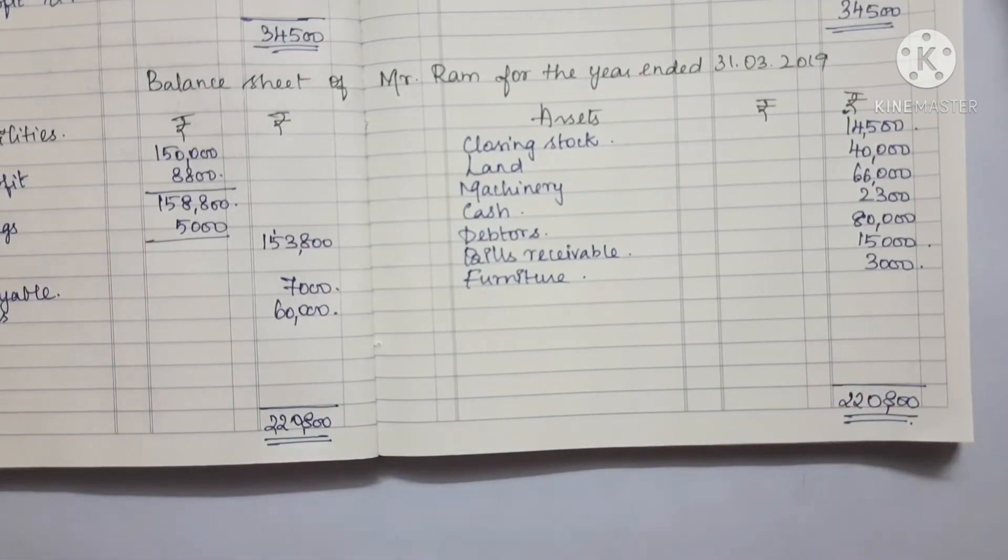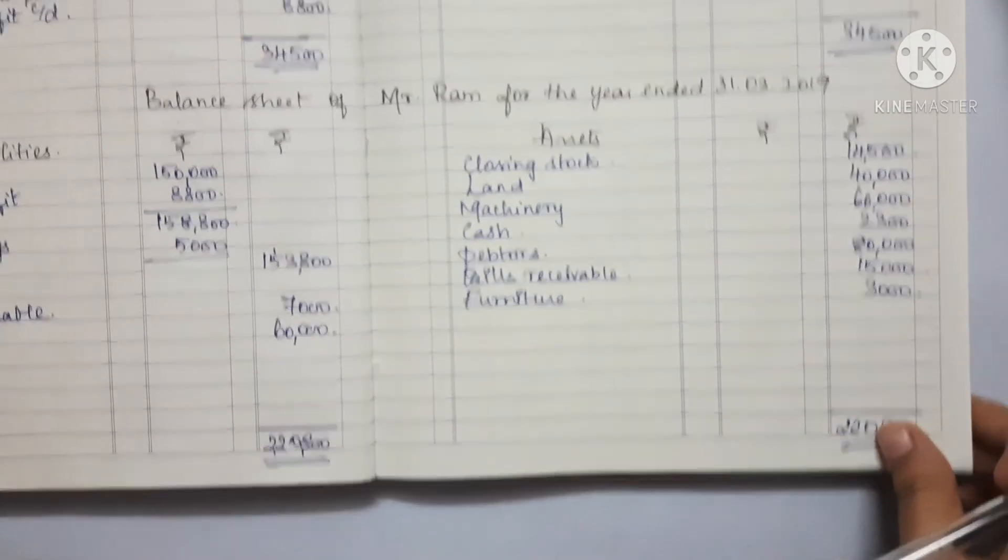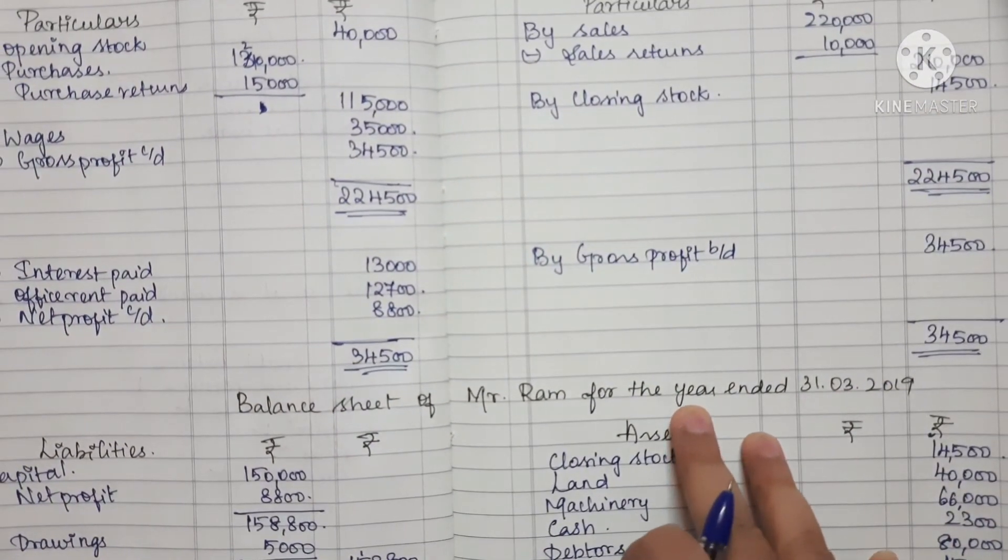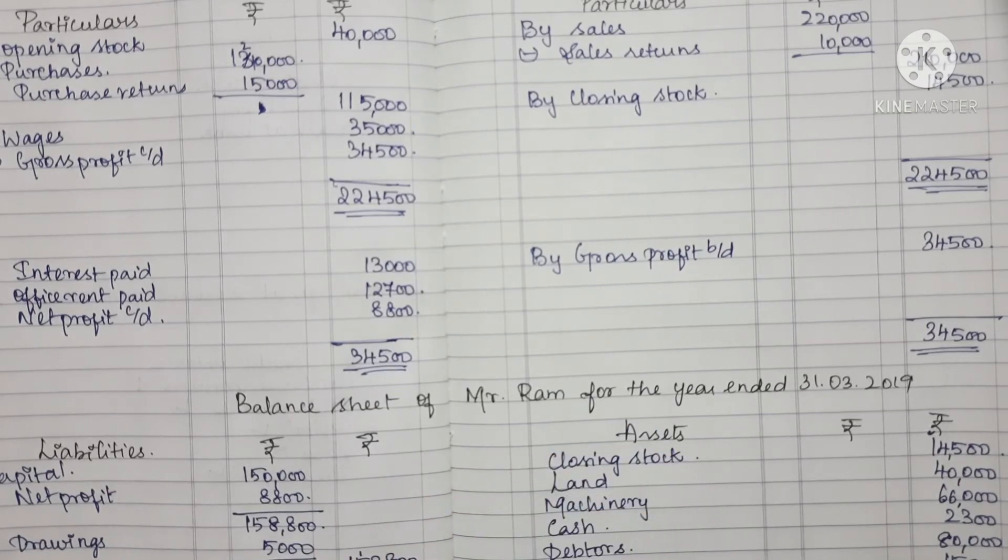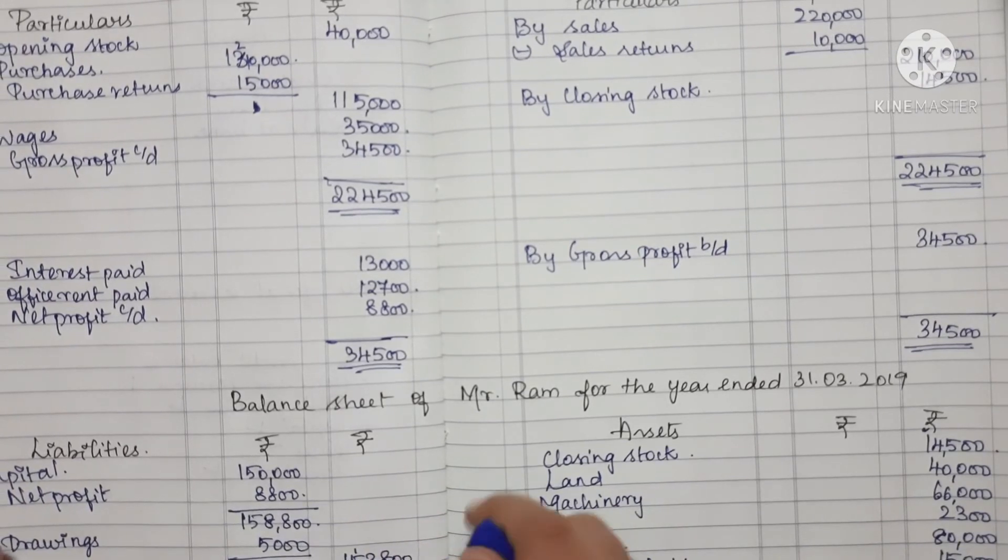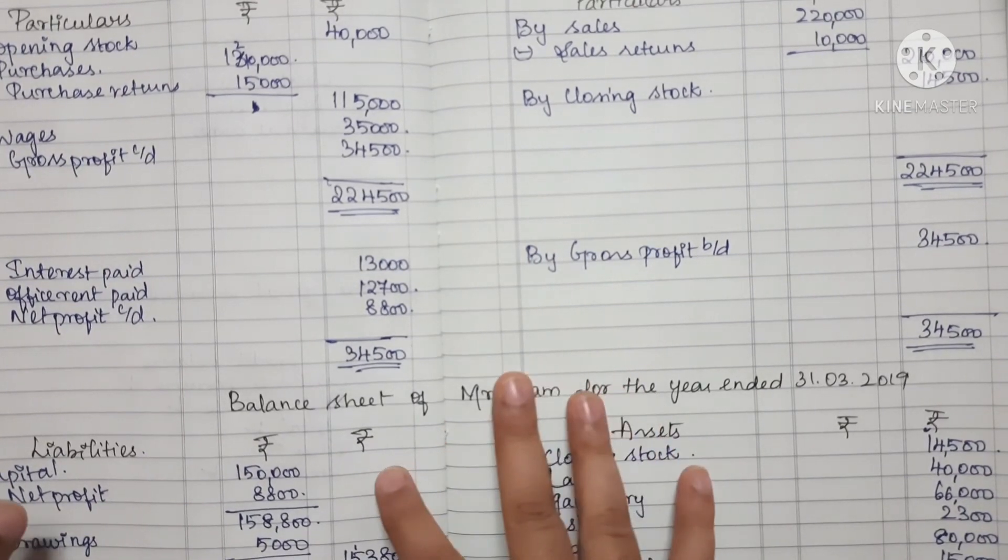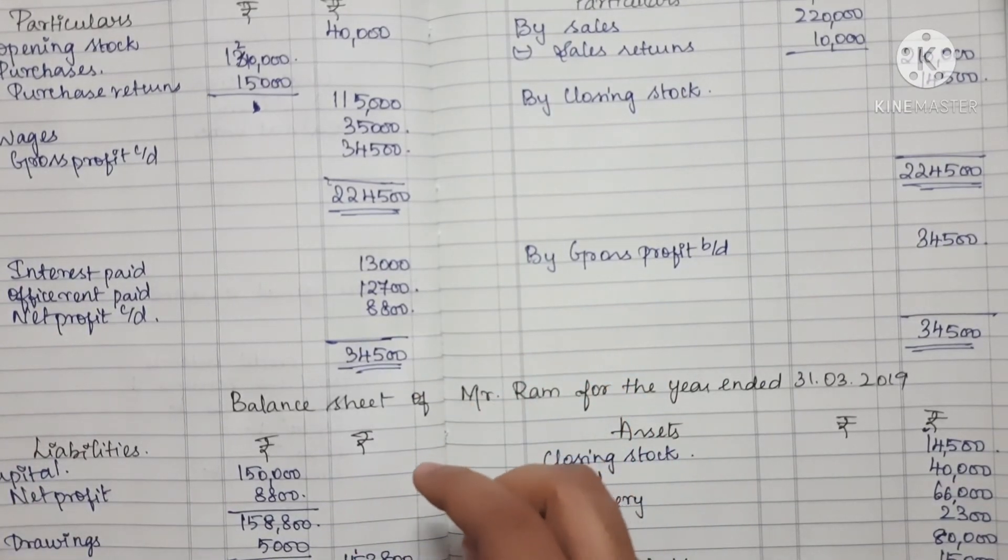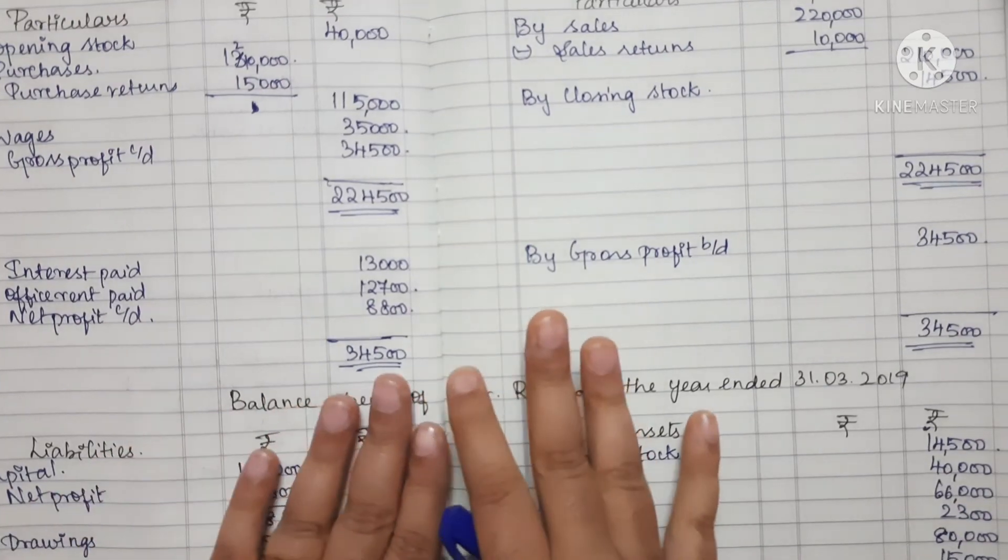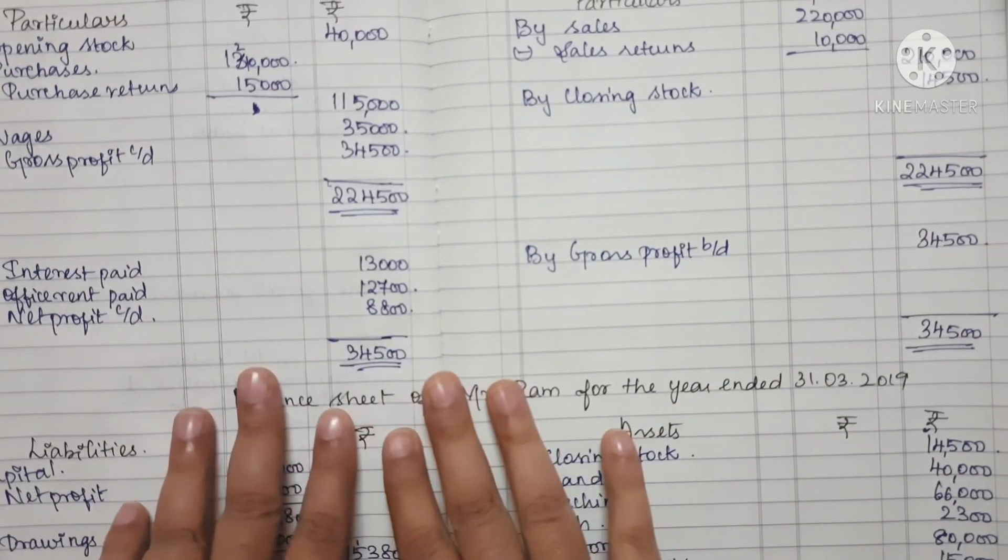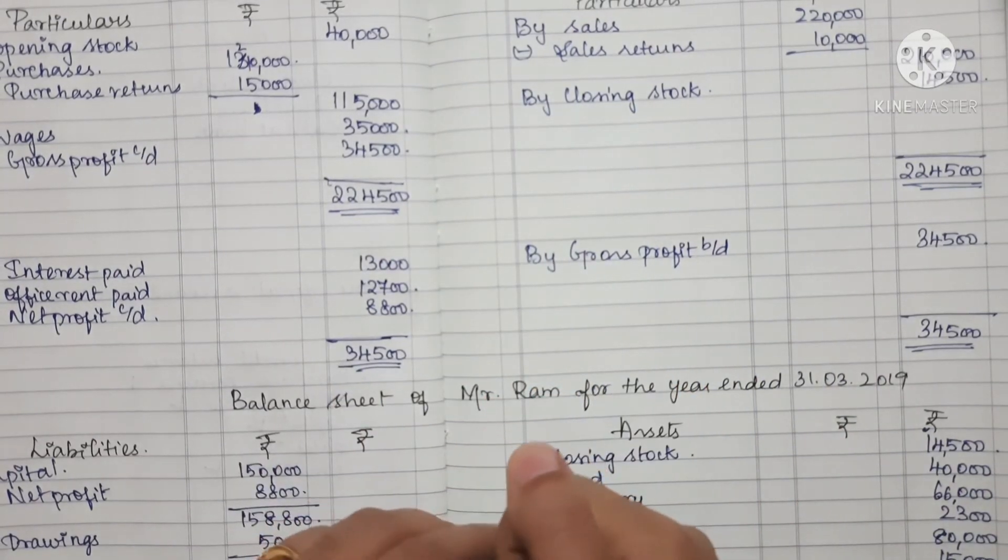The totals are correct. These are the final accounts: Trading Account, Profit and Loss Account, and Balance Sheet. This completes the final accounts preparation. You can see adjustments in the next chapter. Stay tuned for more videos. Keep watching, keep learning. Thank you.